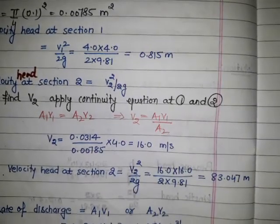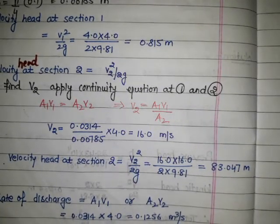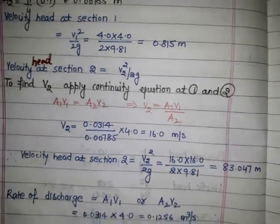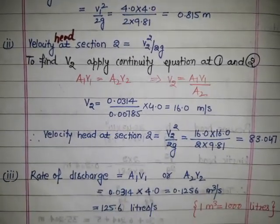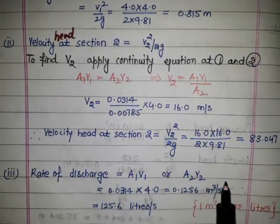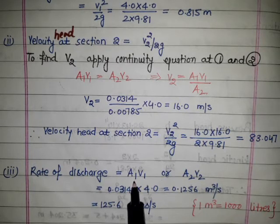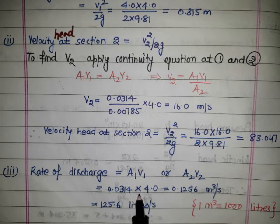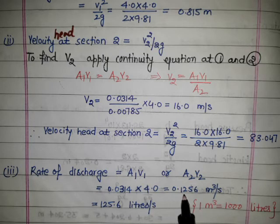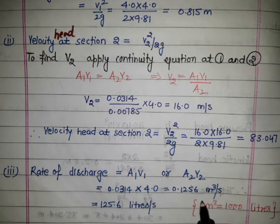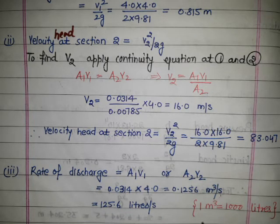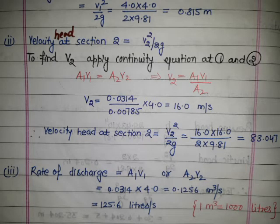Finally, the rate of discharge Q = a1·v1 = 0.0314 × 4 = 0.1256 meter cube per second. Converting to liters, since 1 meter cube equals 1000 liters, this becomes 125.6 liters per second.